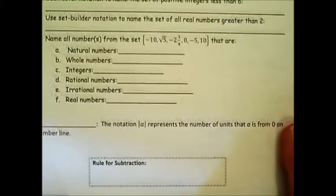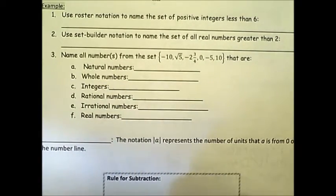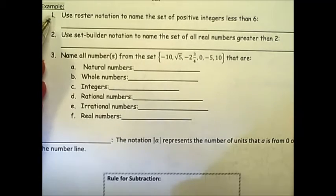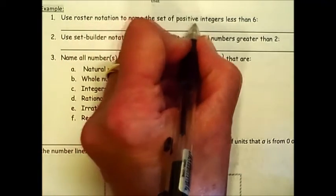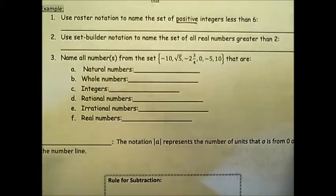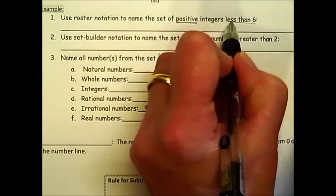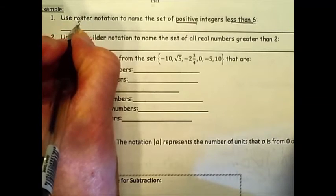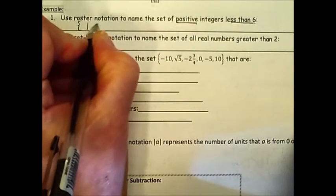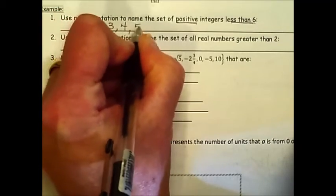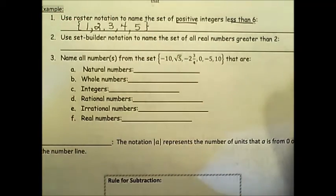So let's look at some examples of classifying them and practicing using roster and set builder notation. In this first example on the second page here of the class notes, it says use roster notation to name the set of positive integers less than 6. So we're dealing with positive, so we won't go below 0 or include 0 for that matter, which is neither positive nor negative. But we want the integers that are less than 6. The smallest one would be 1, 2, 3, 4, and 5.